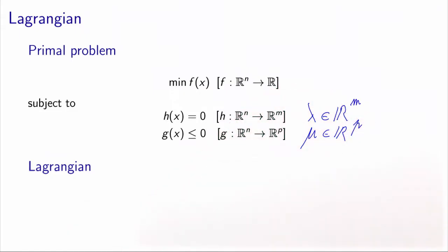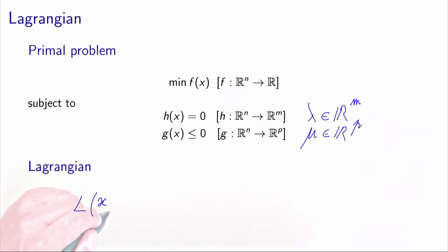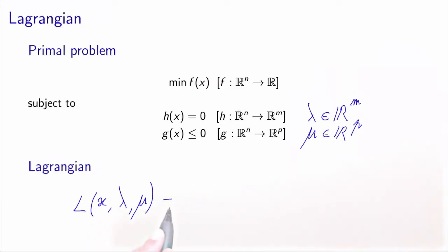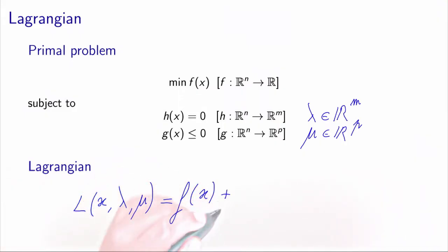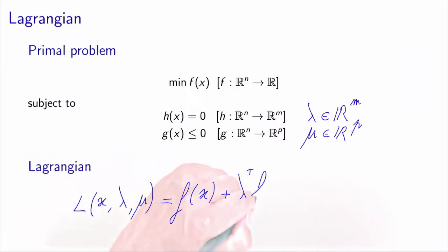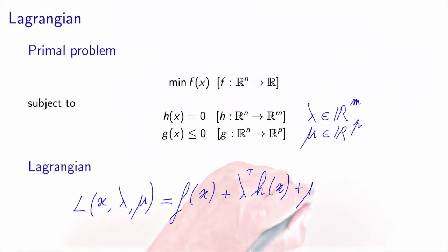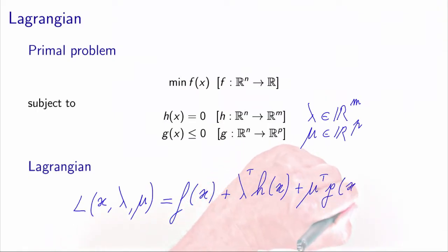The relaxation of these constraints by moving them into the objective function will generate a function called the Lagrangian. The Lagrangian, denoted by L, will depend on the original variables — called the primal variables x — and the two sets of penalties lambda and mu, which we will call either Lagrangian multipliers or dual variables. The Lagrangian is a combination of the objective function, one penalty term for the equality constraints, and one term for the inequality constraints.